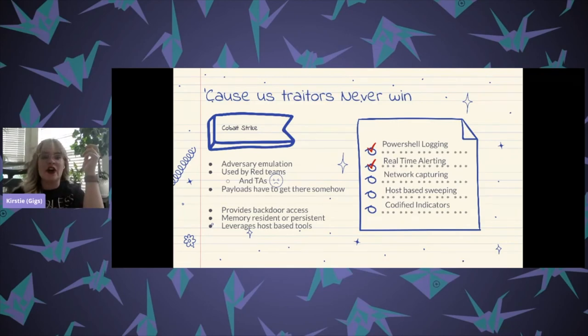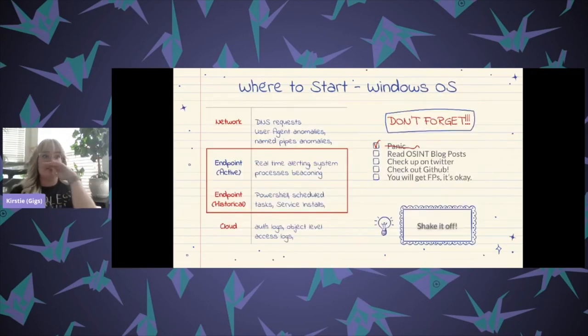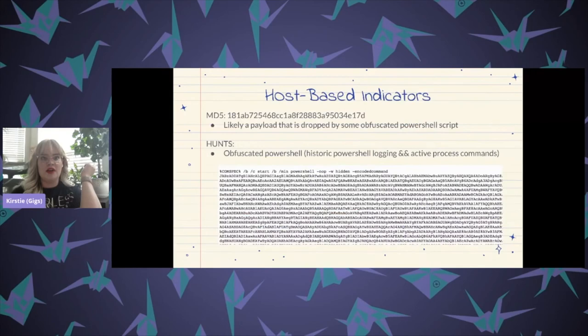So first we have to take a look at all of the indicators that are provided in the blog. And one of those being this host-based indicator that is a payload, right? So generally speaking, Cobalt Strike is going to be represented on a host as some obfuscated PowerShell.